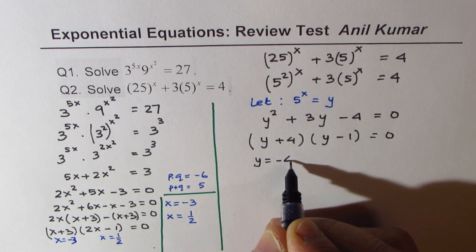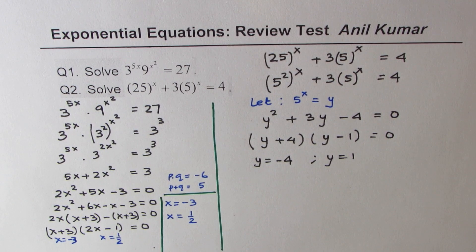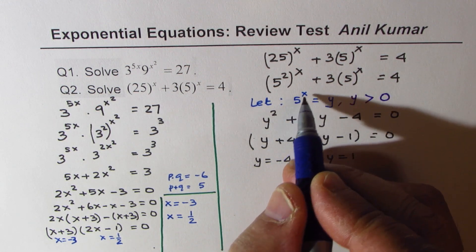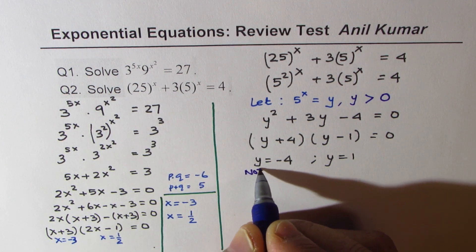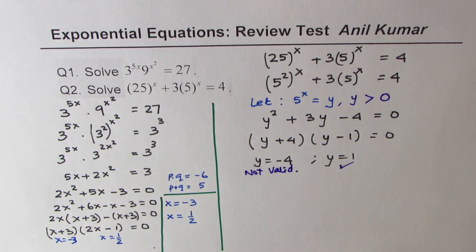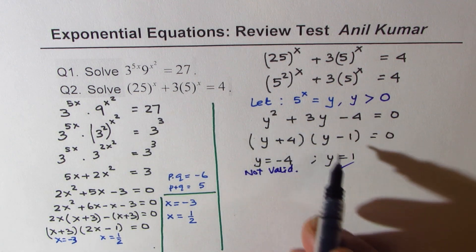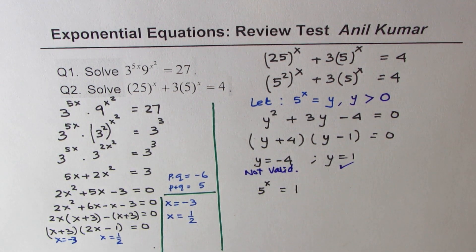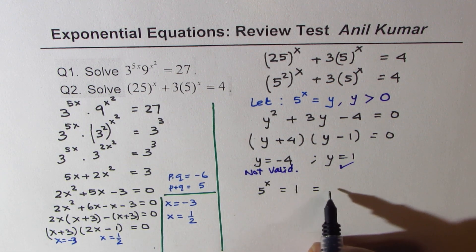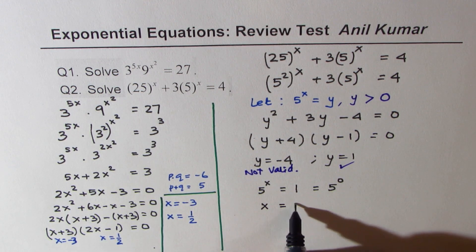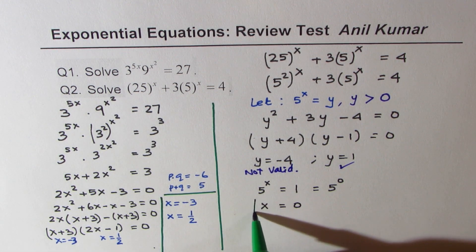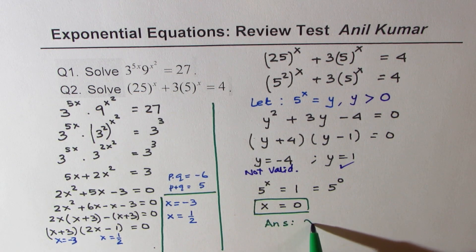That gives two solutions: y equals negative 4 and y equals positive 1. Since y equals 5 to the power of x, y must be greater than 0, so y equals negative 4 is not valid. However, y equals 1 is a valid solution. Writing 5 to the power of x equals 1, and since 1 is 5 to the power of 0, this gives x equals 0. So the exponential equation has one answer: x equals 0.